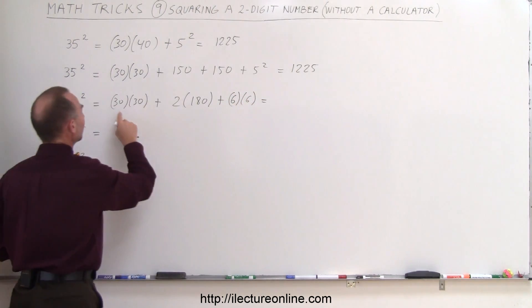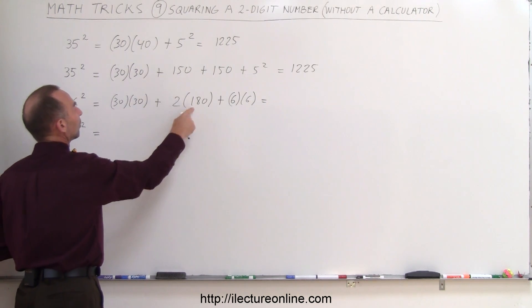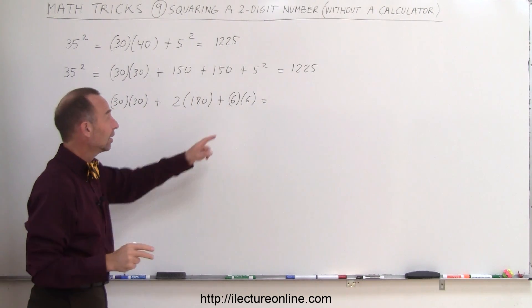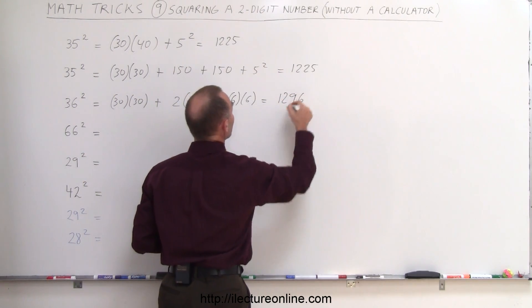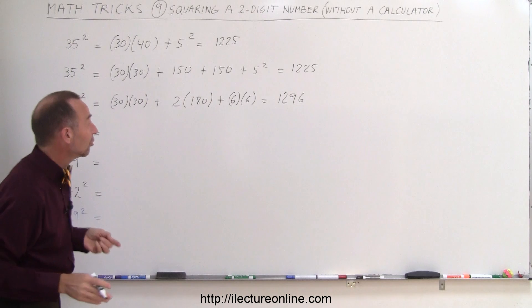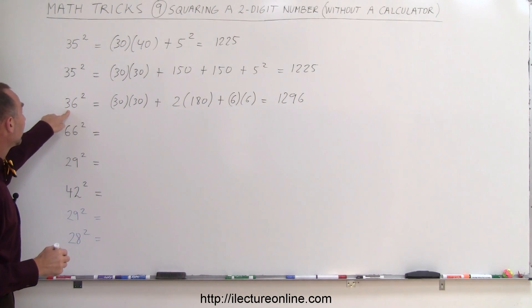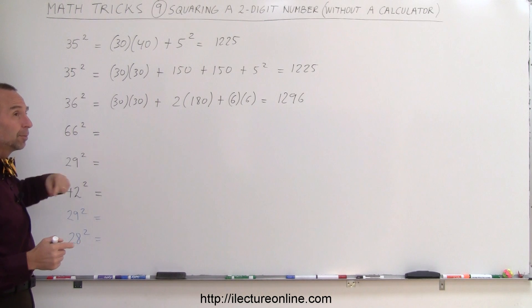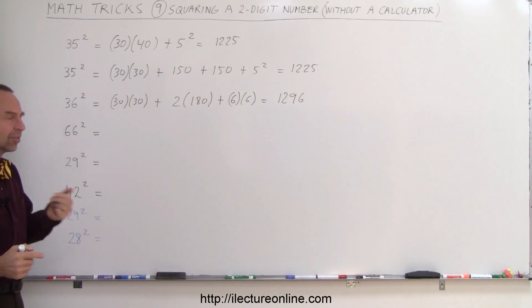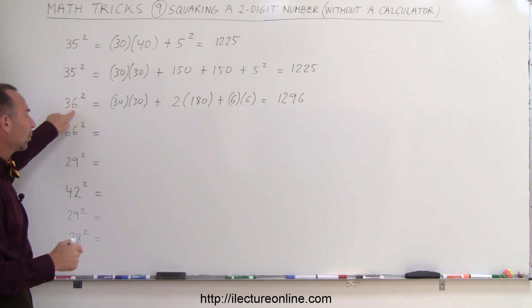And then you add it up in your head, you go 900 plus 360, that's 1260, plus 36, that would be 1296, and that would be 36 squared, so in your head, you go 30 times 30 is 900, 30 times 6 is 180, you do it twice, it would be 360, 900 plus 360 is 1260, plus 6 squared is 36, 1260 plus 36 is 1296.